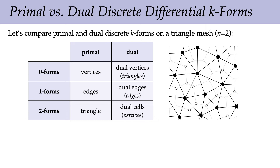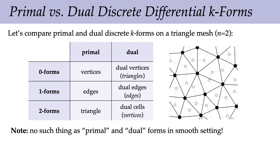The relationship between primal and dual forms: primal zero-forms live at primal vertices (black dots), dual zero-forms live at dual vertices (white dots, associated with triangles). Primal one-forms are at primal edges; dual one-forms are at dual edges. Primal two-forms are stored on triangles; dual two-forms are stored on dual cells naturally associated with original vertices — one dual two-cell per primal zero-simplex.